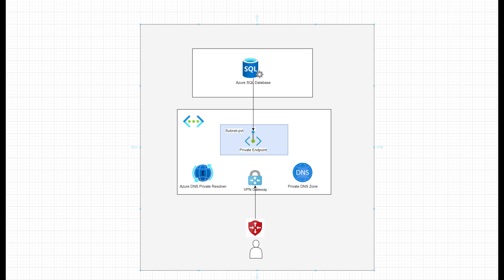This is the architecture diagram that Microsoft shares. I've created a quick one for our purpose. What we're going to do is create an Azure SQL Database, have our virtual network, VPN gateway, an Azure DNS Private Resolver, a private DNS zone for our database.net, and a VPN client on my machine.